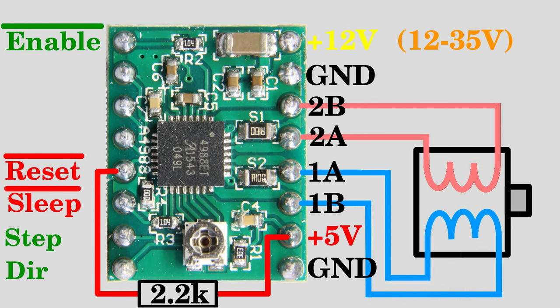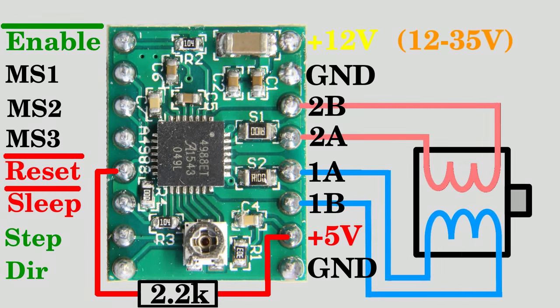Direction and step are connected to the microcontroller. MS1 to MS3 are used to adjust microstepping and all of those terminals have an internal pull down resistor, thus they are on low level by default which means the motors are driven in full step mode. I am driving the motors with half steps, thus MS1 must be on high level.